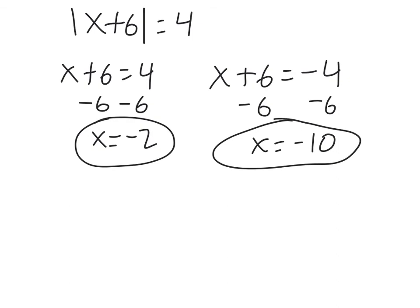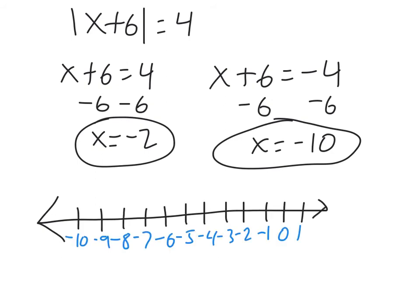Those are our answers, and then again, we graph them. So we take our negative 2 and plot it at negative 2, and negative 10 plotted at negative 10. So again, we got everything down to where it was just the absolute value on the left side, and then turned it into two equations and solved. Alright, one more example, and then we're done.